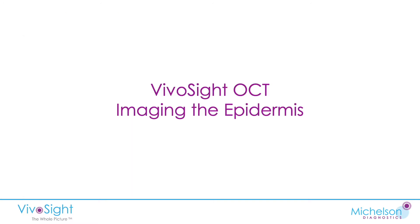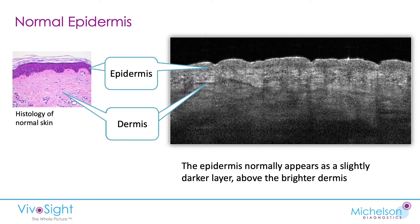So how does VivaCite OCT image the epidermis in particular? VivaCite OCT sees it as a slightly darker layer of tissue. We can see it here on this image of normal skin — there's a distinct band of darker tissue above the dermis, which corresponds to what is seen in histology: an epidermal layer above the dermis. The stratum corneum, which is extremely thin, is visible only as a very bright top layer.